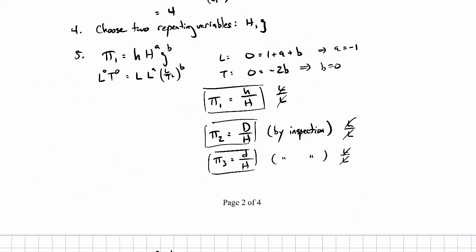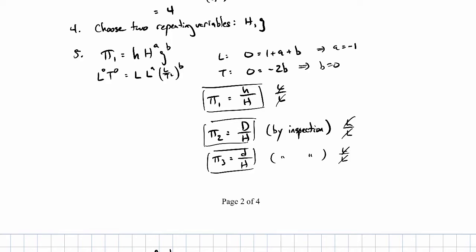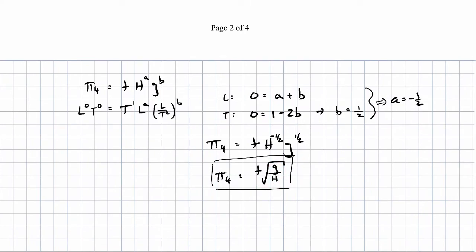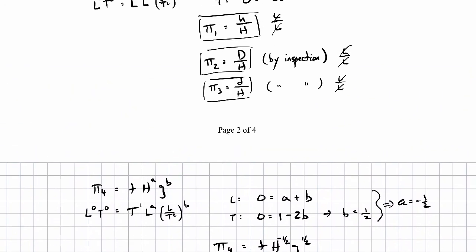Step six is to verify that all pi terms are indeed dimensionless. The first three are all length over length, so those are verified. For pi four: time times the square root of length over time squared divided by length — the lengths cancel, leaving time over the square root of time squared, which cancels out. Don't skip this step; it helps catch any mistakes made in step five.